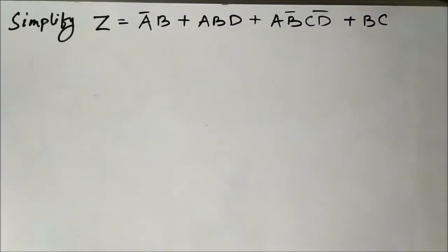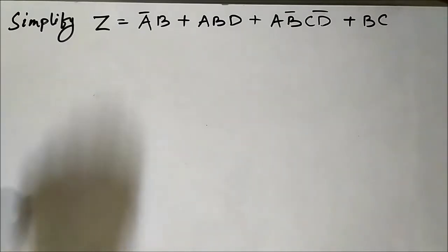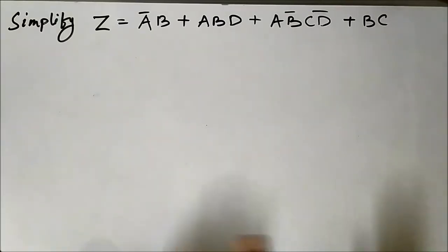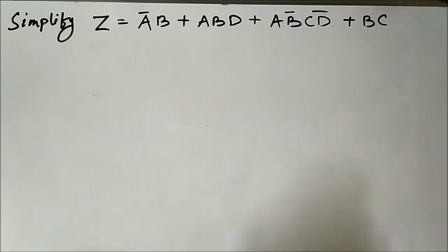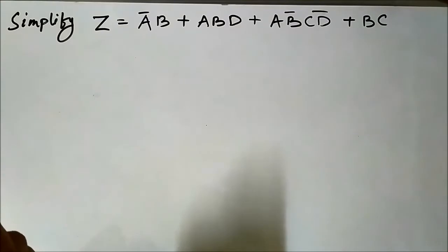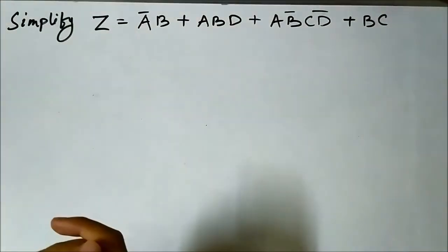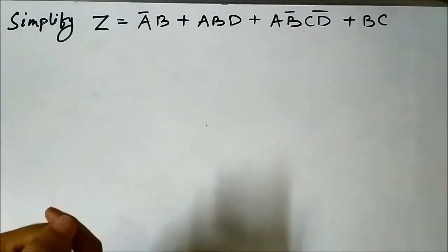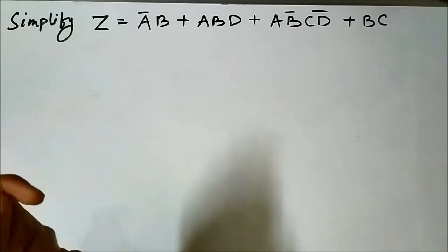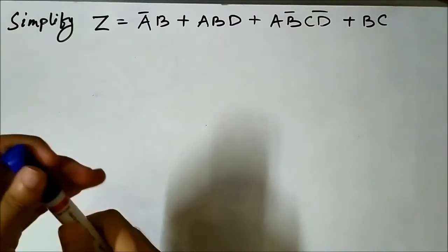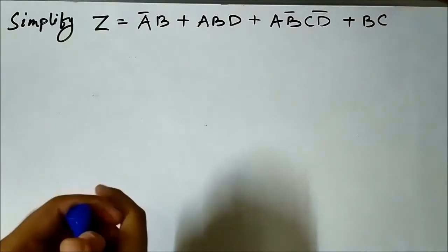Hello friends, welcome to Engineering Tutorial. Here we'll discuss another question on simplification of a Boolean expression. The expression is z = ā·b + a·b·d + a·b̄·c·d̄ + b·c. The first step, as usual, is to identify common variables or common groups of variables.